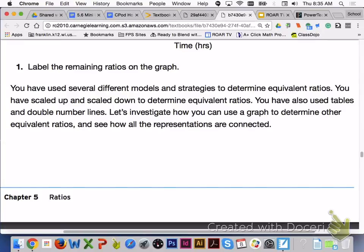You have now used several different models and strategies to determine equivalent ratios. You have scaled up and scaled down to determine equivalent ratios. You have also used tables and double number lines. Let's investigate how you can use a graph to determine other equivalent ratios and see how all the representations are connected.